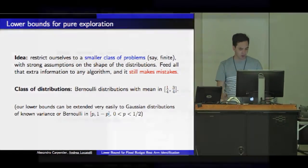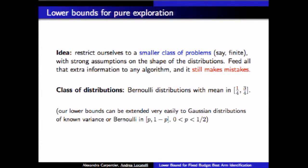What's the idea for lower bounds in general and for bandit problems for pure exploration? We want to restrict ourselves to a smaller class of problems, say a finite class, and make strong assumptions on the shape of the distributions. We feed all this extra information to any algorithm and show it still makes mistakes. In my talk, I restrict myself to Bernoulli distributions with mean in this interval, but our results can be easily extended to Gaussian distributions of known variance or Bernoulli in a different interval.